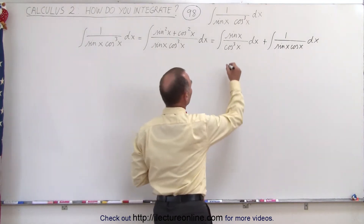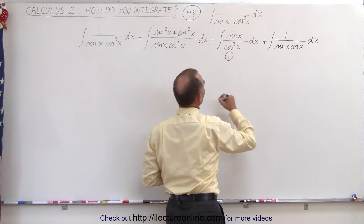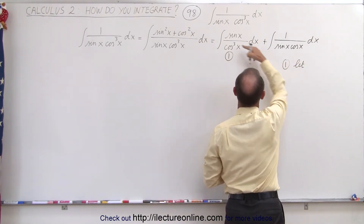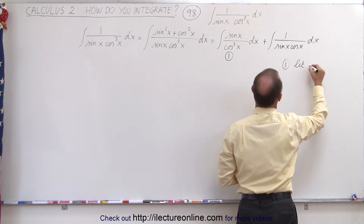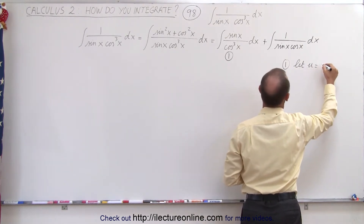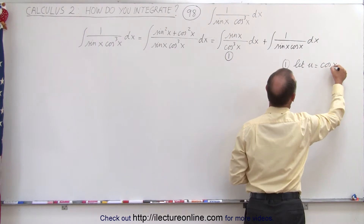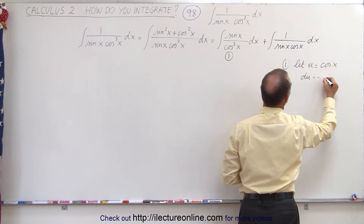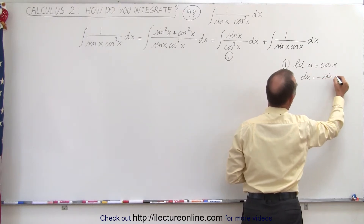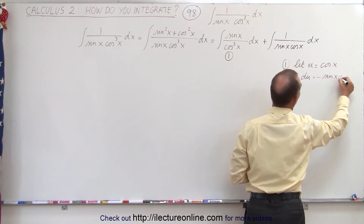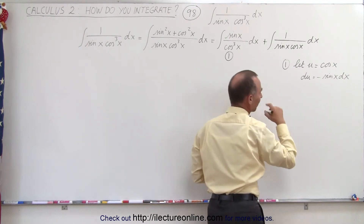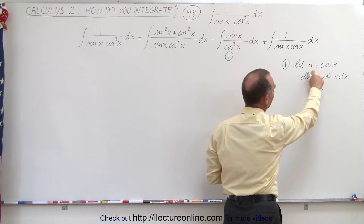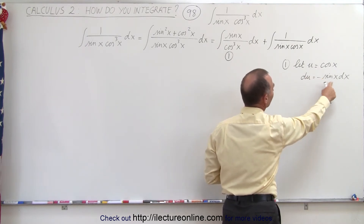Here we have our first integral. On the first integral we let u equal the denominator, cosine of x, which means that du, the derivative of that, will be equal to minus sine of x dx. The derivative of cosine is negative sine, the derivative of sine is positive cosine, so the differential du is going to be minus sine of x dx.